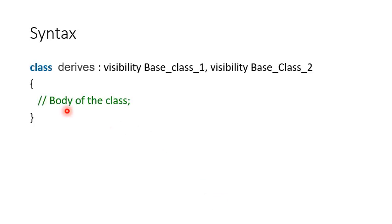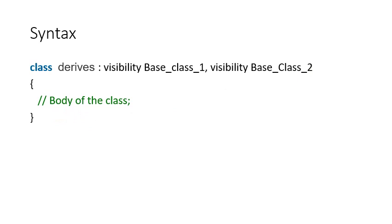The syntax for multiple inheritance is: class, derived class name, colon, visibility mode — which can be public, private, or protected — followed by base class name one, base class name two, and the body of the class.